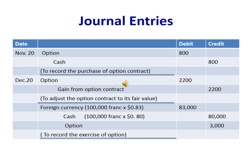Finally, we record the exercise of the option by receiving foreign currency at the market price of $0.83, paying cash at the strike price of $0.80, and removing the option contract with a value of $3,000.